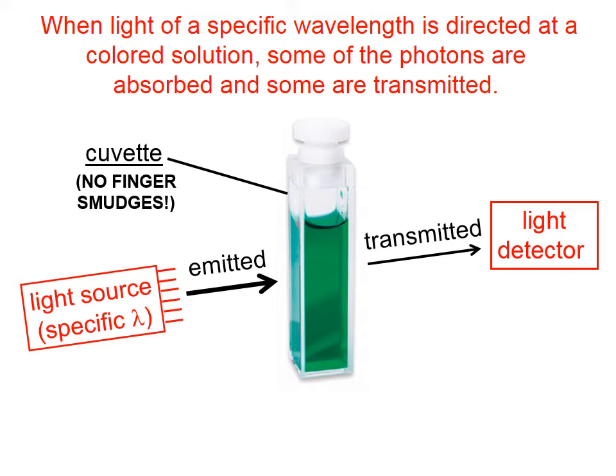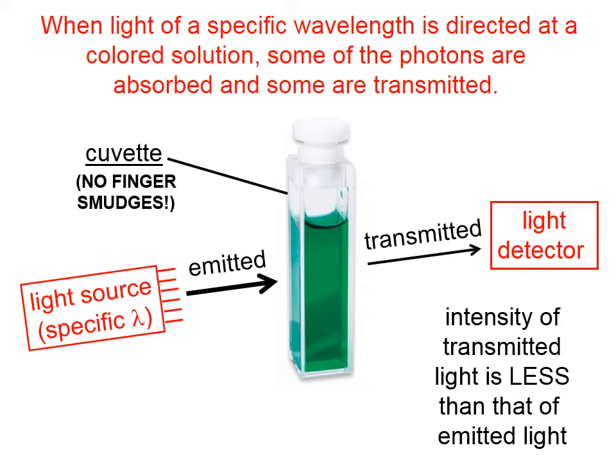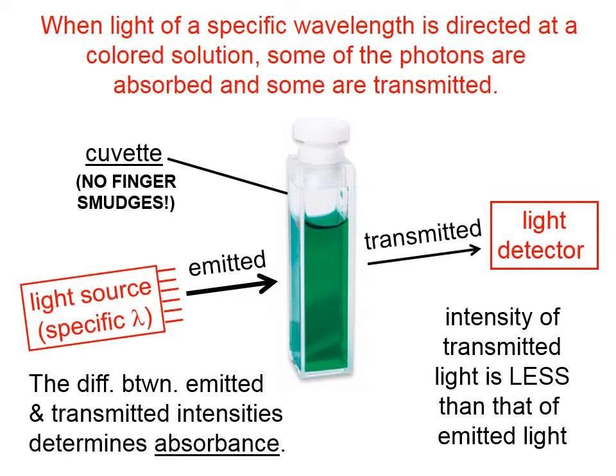The intensity of the transmitted light is less than that of the emitted light, and the more concentrated the solution is, the less light is transmitted. When we compare the emitted intensity with the transmitted intensity, we can determine the absorbance of this particular solution. If we have solutions of different concentration, we will get a different absorbance for each of those solutions.